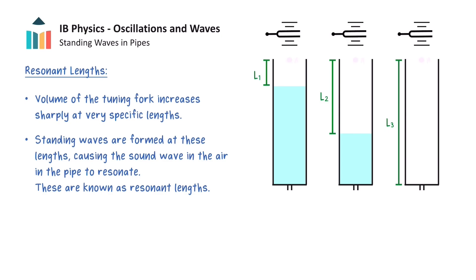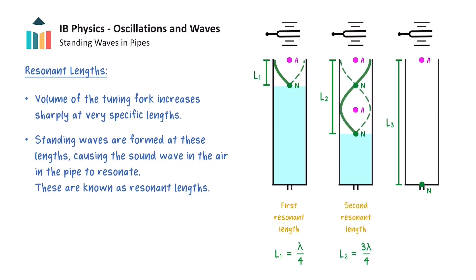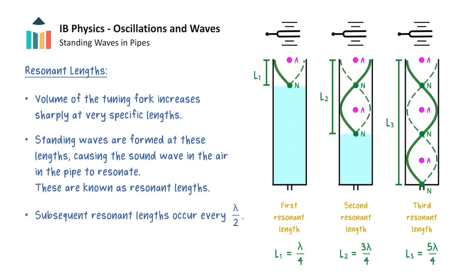We have the boundary conditions of an antinode at the open end of the pipe, and a node at the surface of the water, as this is a change in medium and so acts like a closed end of a pipe. The shortest pipe in which resonance can occur is called the first resonant length. The standing wave will look like this, and hence the first resonant length occurs when the length of the air column is equal to a quarter of a wavelength. The second resonant length occurs at three quarters of a wavelength, and the third resonant length occurs at five quarters of a wavelength, so half a wavelength is added to each subsequent resonant length.